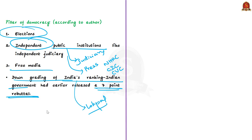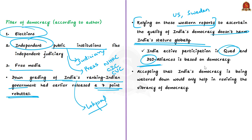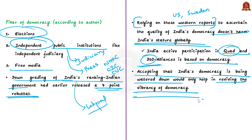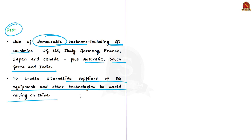The question is whether it is right to rely on these Western reports to ascertain the quality of India's democracy. The author's opinion is that considering these reports as legitimate does not harm India's stature globally, because India is an active participant in two important international mechanisms — Quad and D10 — both of which are based on democracy. Quad is a coalition of four maritime democracies in the Indo-Pacific: Japan, India, the United States and Australia. D10 is a club of democratic partners including G7 countries with Australia, South Korea and India, aimed at creating alternative suppliers of 5G equipment to avoid dependence on China.